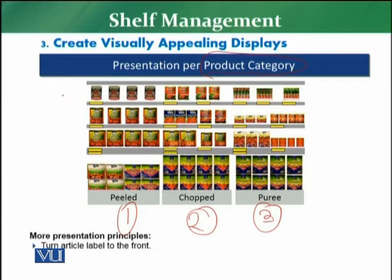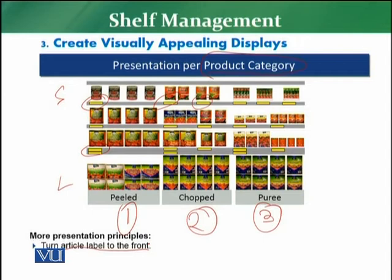In this display, packaging is arranged from smallest to largest, and labels are displayed facing front so you can read them. The key main principle here is turning the article label to the front. Products should be presented as per their categories — separately and in a structured way. For example, for tea: black tea, green tea, and flavored tea as three separate categories.